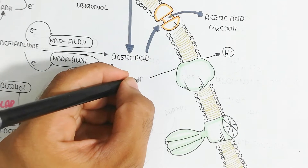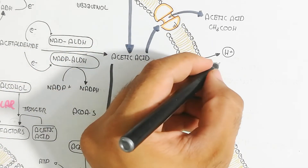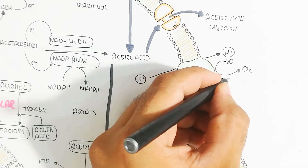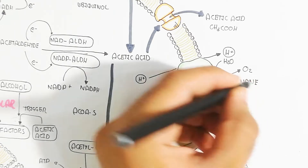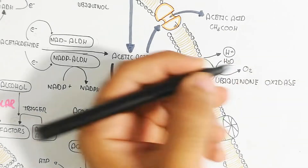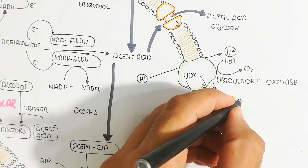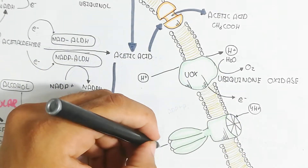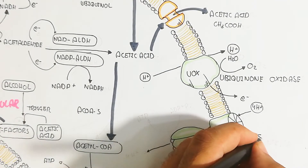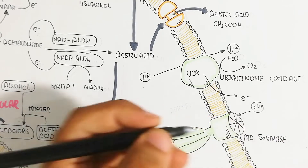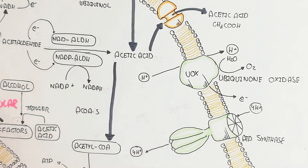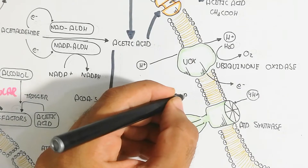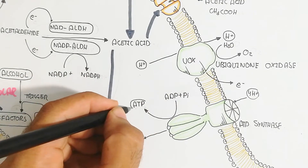After protons are pumped out, oxygen is used to produce water. NADH donates electrons while protons accumulate outside the membrane. When four protons re-enter through ATP synthase, the energy is stored as ATP — formed from ADP plus inorganic phosphate.